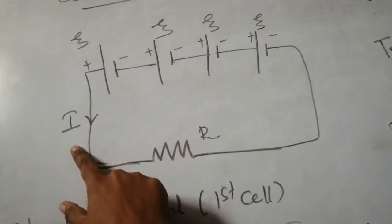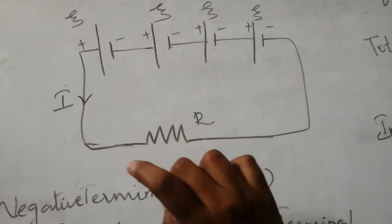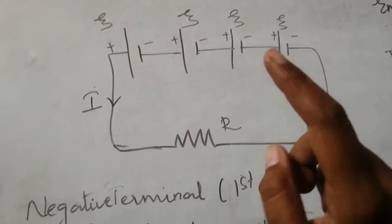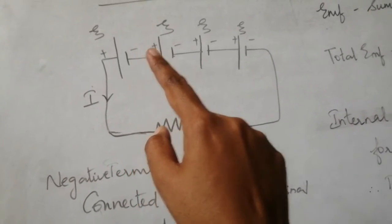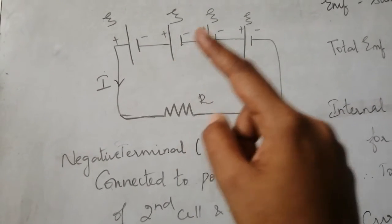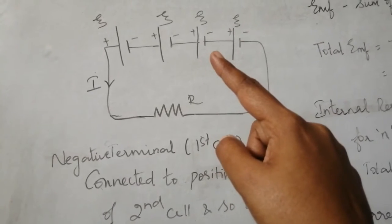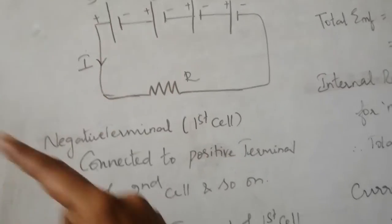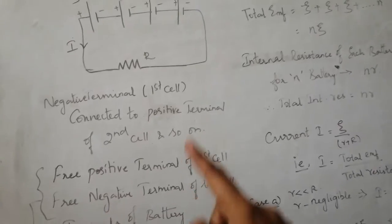Current flows in the circuit when you connect an external resistance R. Here N number of batteries are connected in series. For a series connection, the negative terminal of the first battery is connected to the positive terminal of the second battery, the negative of the second to the positive of the third, and so on. The free positive terminal of the first cell and the free negative terminal of the last cell serve as the overall terminals.